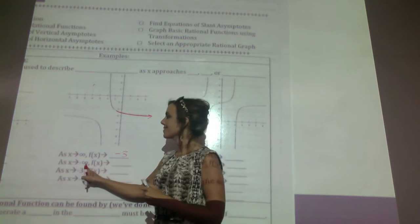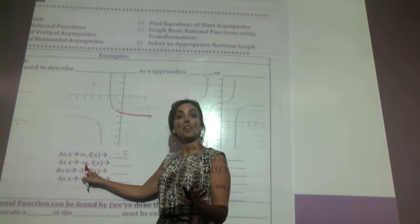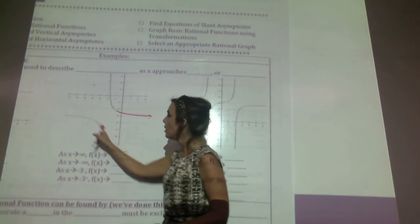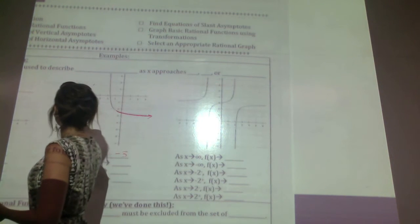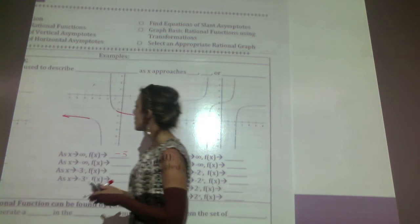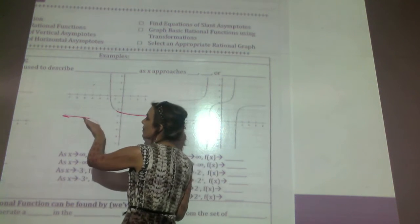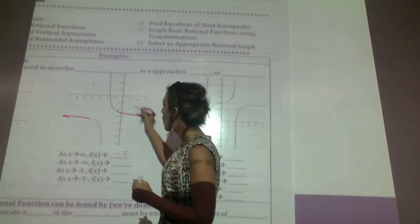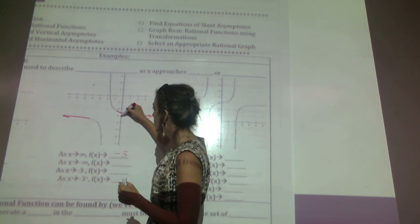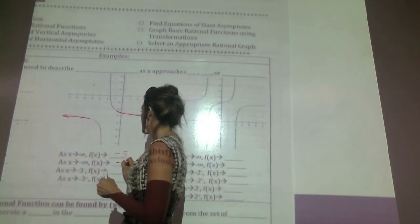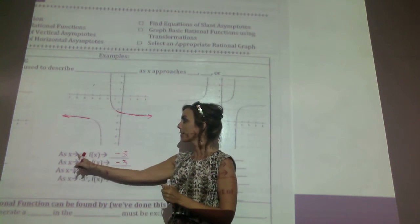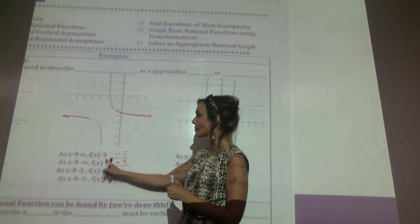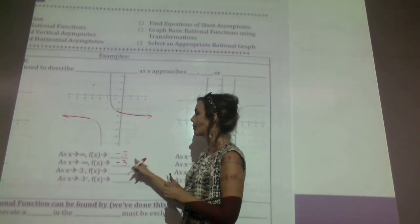As x approaches negative infinity, that's the extreme left-hand side of our graph. You can see that the graph is coming up and flattening out at y equals negative 3. So for both x approaching positive and negative infinity, f of x approaches negative 3.